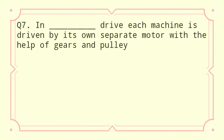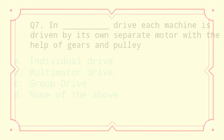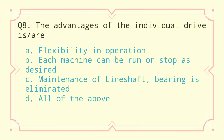Question 7: In this drive, each machine is driven by its own separate motor with the help of gears and pulleys. a) individual drive, b) multi-motor drive, c) group drive, d) none of the above. The correct answer is individual drive.